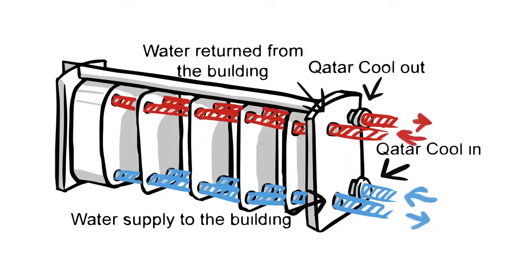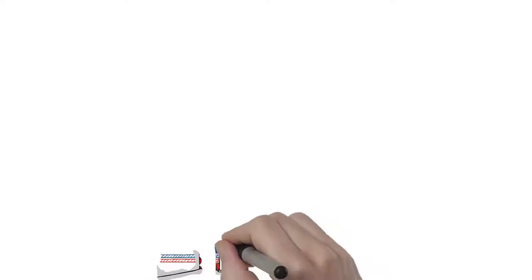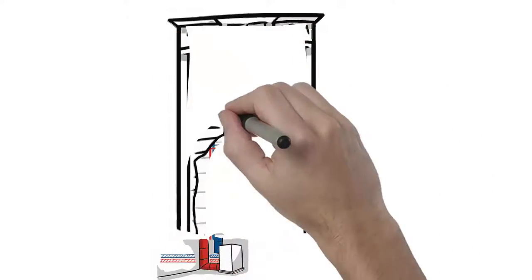The chilled water flows between two of the plates where the warm water returning from the building flows between two adjacent plates. Electronic pumps pump the building's cool water through the building into the fan coil units where fans push the air against the cold FCU coil.